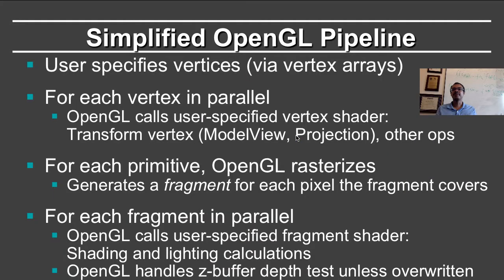To summarize the simplified pipeline, the user-specified vertices where our vertex arrays are processed in parallel by the vertex shader. Semantically, OpenGL is calling the same vertex shader separately for each of the different vertices. In fact, this high level of parallelism is one reason why graphics hardware is so fast, and has now been adapted for a number of tasks that are not immediately relevant to graphics itself.